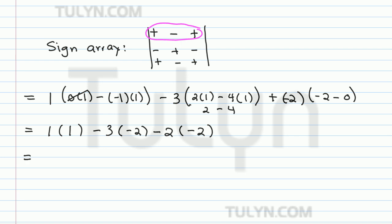It's looking nicer, and now we can multiply before we add these terms together. Simplifying: 1 times 1 is 1, minus 3 times negative 2 gives us 6, and negative 2 times negative 2 gives us positive 4.